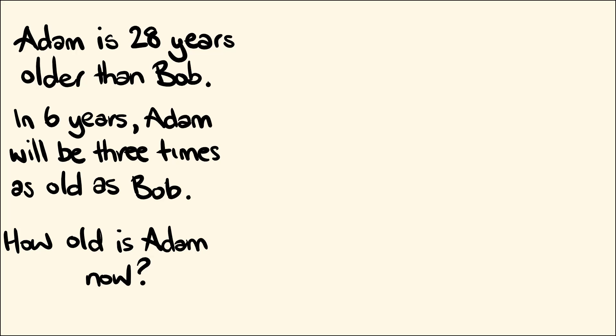Adam is 28 years older than Bob. In six years, Adam will be three times as old as Bob. How old is Adam now?